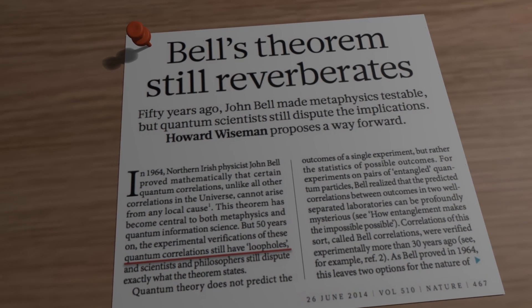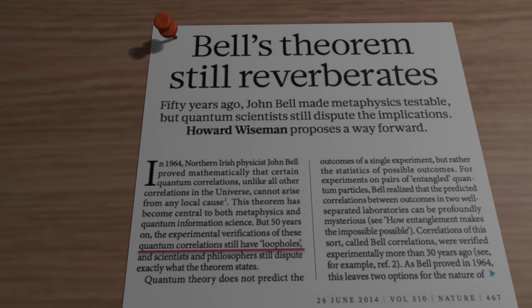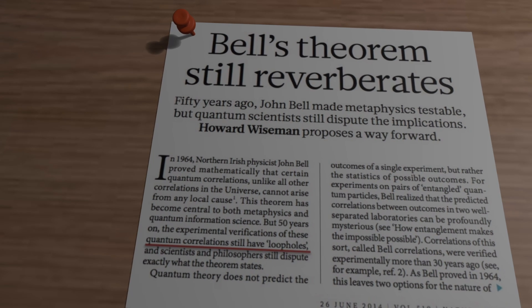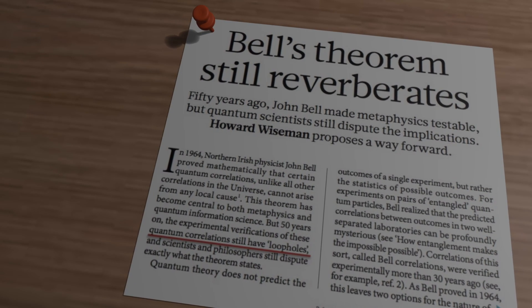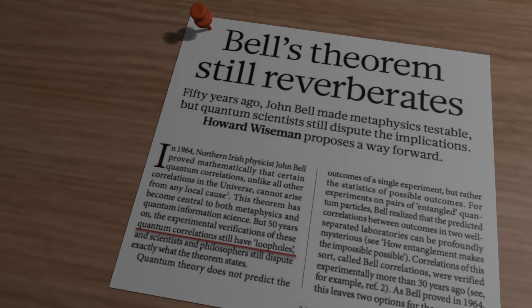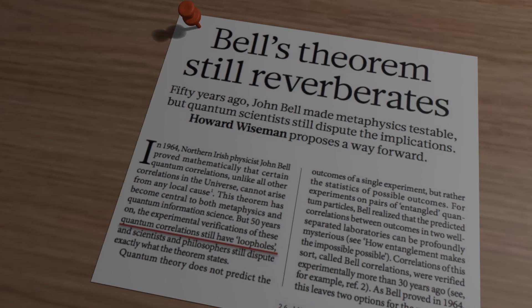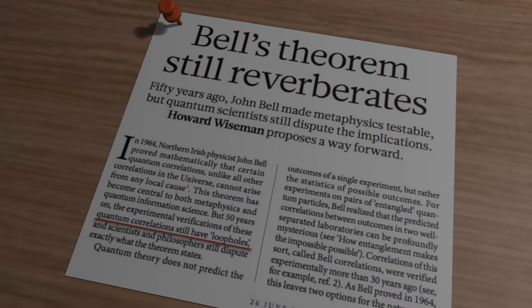Experiments testing Bell's inequality faced what are known as loopholes. These loopholes were potential flaws in the experimental setup that could allow for classical explanations, rather than quantum mechanics. The two most important loopholes were the detection loophole and the locality loophole.